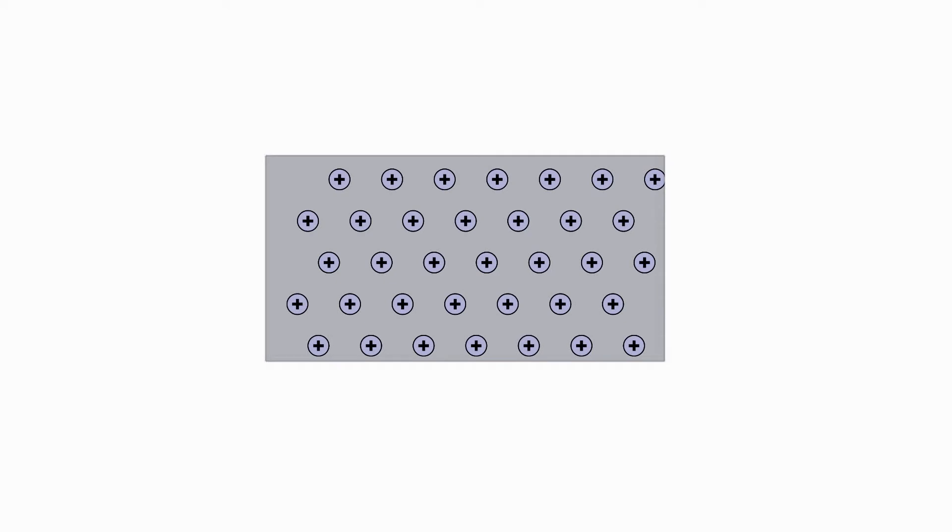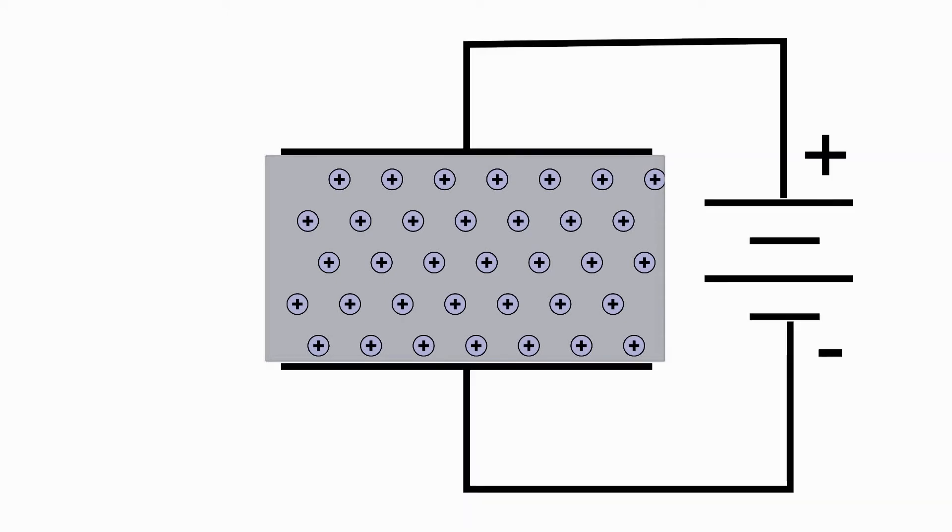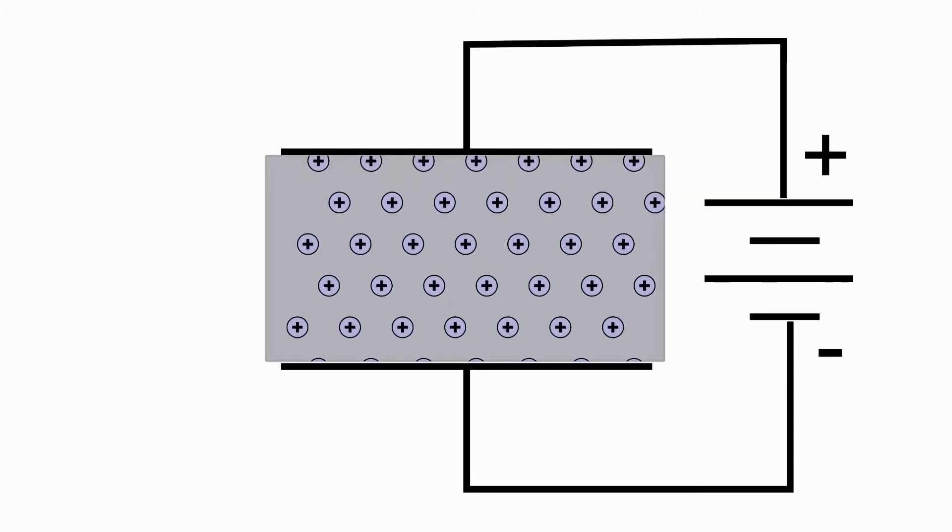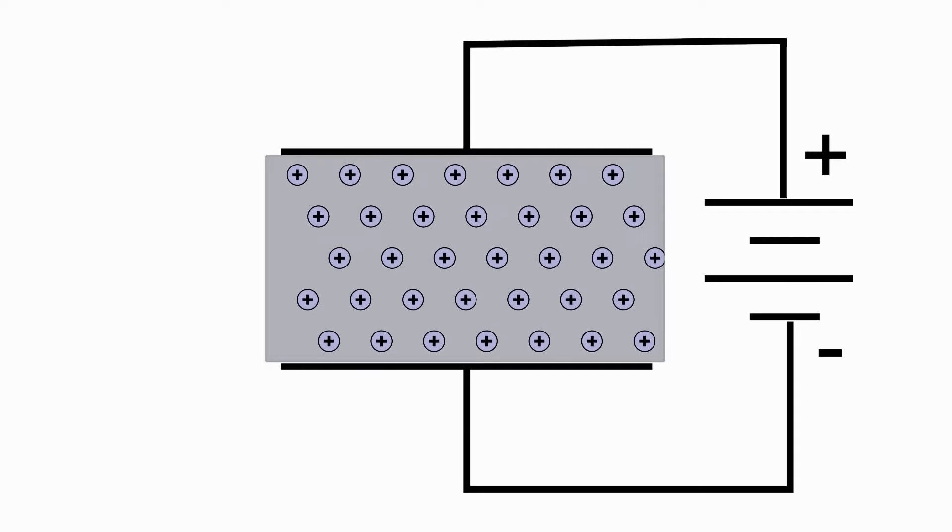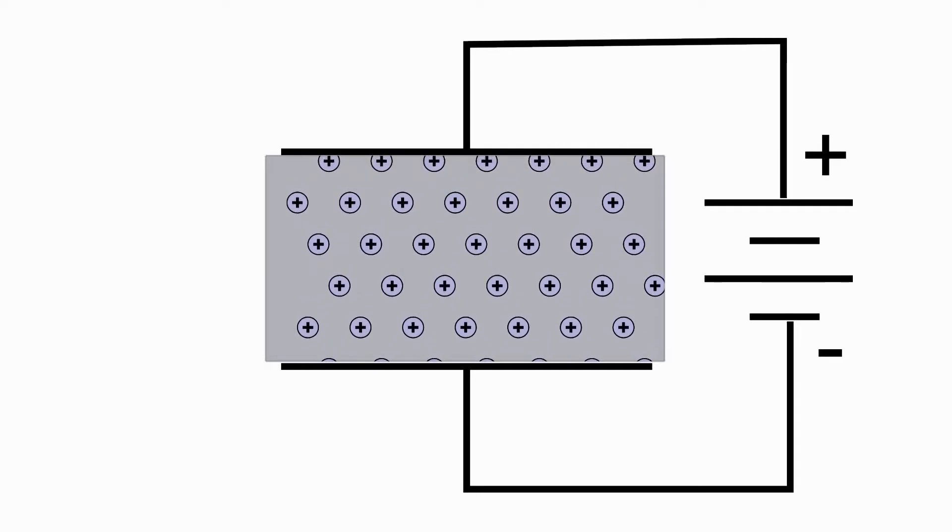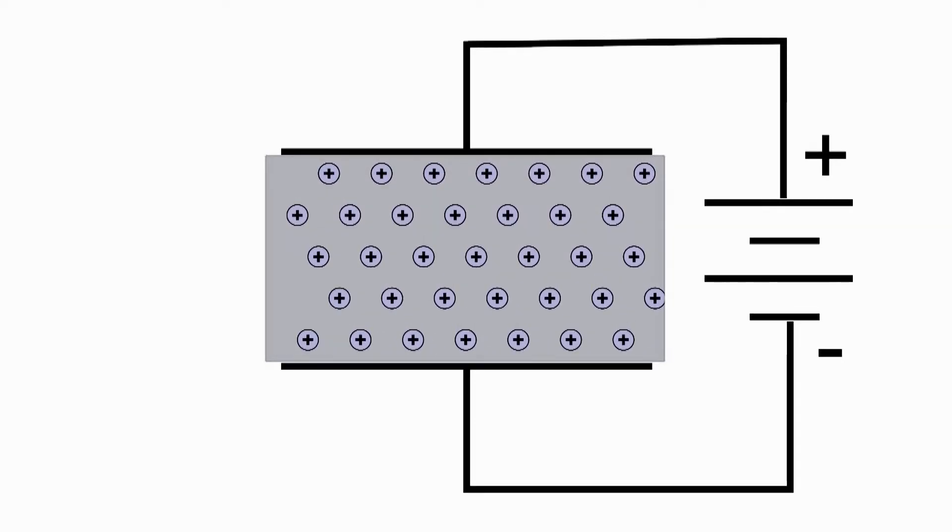What happens if we connect a battery across a block of p-type material? Holes in the p-type material accept electrons from the negative battery contact. This leaves the material negatively charged, and excess electrons are swept towards the positive battery contact. Again, we have current flow. In this p-type material, the holes appear to migrate towards the negative battery contact. They act as if they were positive charges.